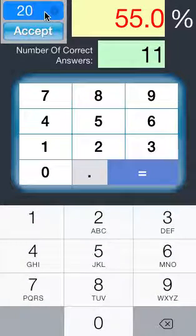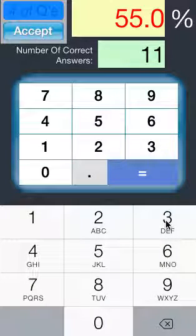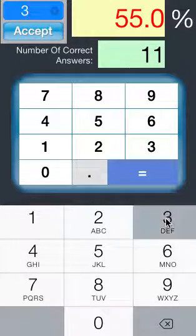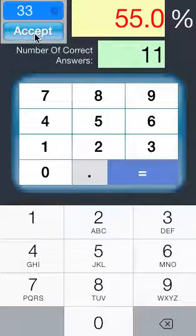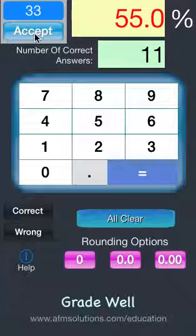The keyboard will pop up. We can click on the little X or tap on the X to clear the 20. Let's say we're grading a test with 33 problems, so we do 33 and then click on accept. That saves the number 33 in memory.